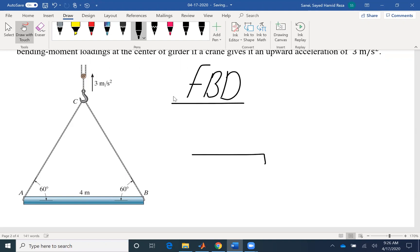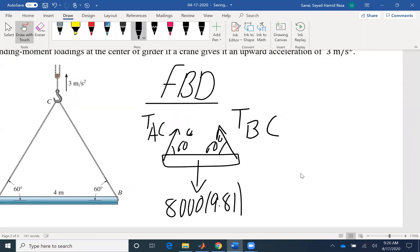We have a bar AB. We have the two tensions, TAC as well as TBC. We have the angle 60 degrees for both. And then we have the weight, which is 8 megagram or 8,000 kilograms. For the whole bar, it's acting at the center of gravity. It's very easy to determine the center of gravity for a uniform bar.